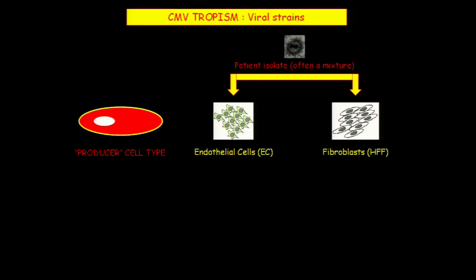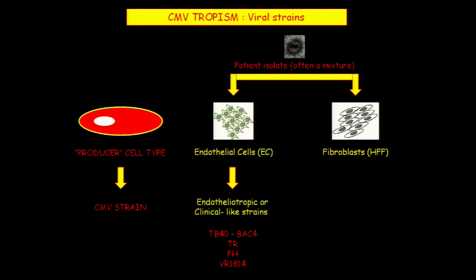Talking about the producer cell type: this has been the origin of the different strains. When you isolate virus from an infected individual, that virus has to be grown and amplified somewhere to get stocks. Originally it was mainly amplified on fibroblasts. Then, in more recent years, endothelial cell culture became more established and people started propagating the virus on endothelial cells. When you do that over multiple passage rounds, you get the endotheliotropic strains. TB40/E was one of these strains, which was then cloned as a bacterial artificial chromosome and called BAC4. TR, PH, and VR are other strains. The fibroblast-adapted strains — AD169, Towne, and Toledo — were the most commonly used up to maybe 20-30 years ago.